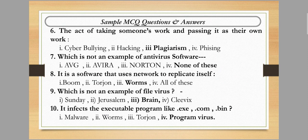Next question: it infects executable programs like .exe, .com, and .bin. The options are malware, worms, torsion, and program virus. Option number four — program virus — is the correct answer. Program virus mainly affects files with extensions like .exe, .com, and .bin.